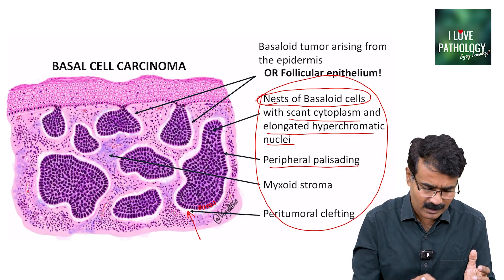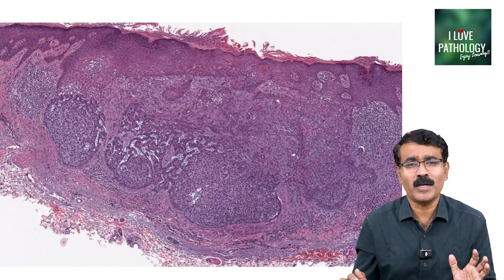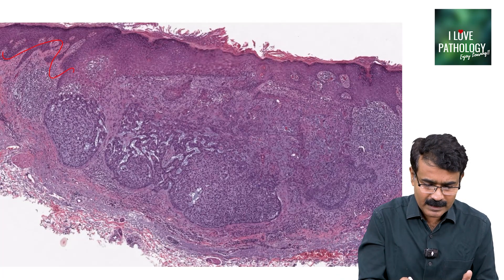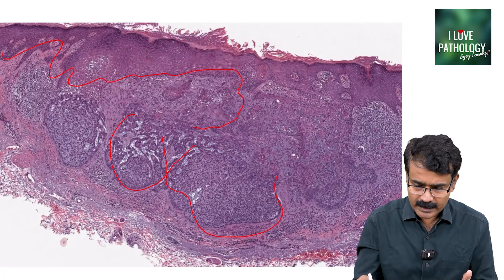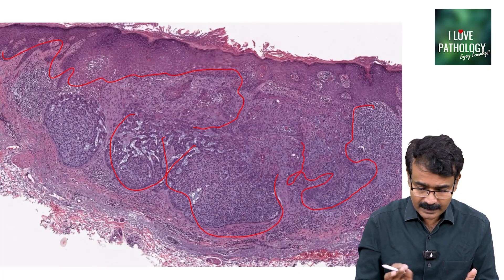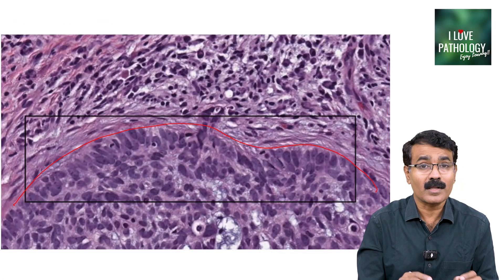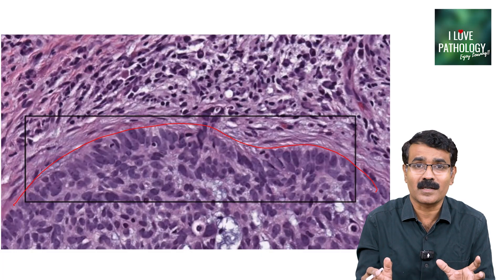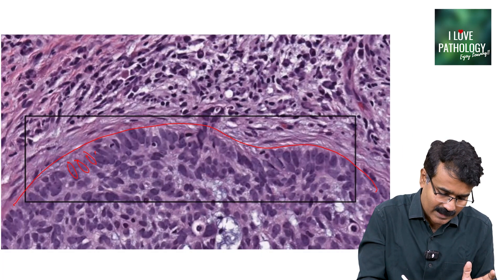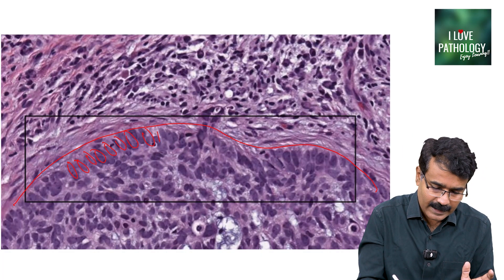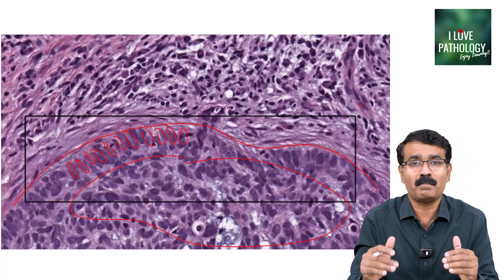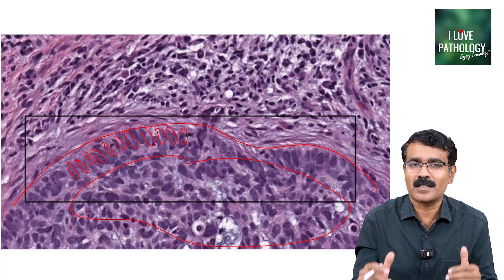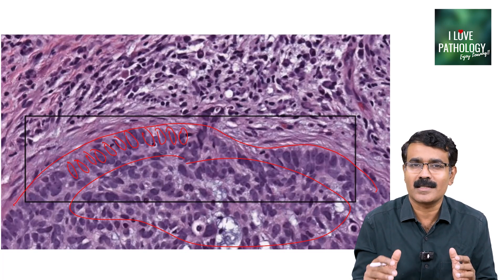Let me show you the histopathological image of basal cell carcinoma. This is your normal epithelium, and that is the tumour arising from the epithelium in the form of nests or islands. In each island, you can make out that the periphery of the tumour island contains nuclei which are parallel to one another — as if forming an enclosure of the central cells. That's your peripheral palisading, the characteristic histological feature of basal cell carcinoma.